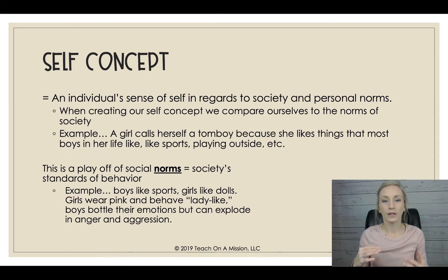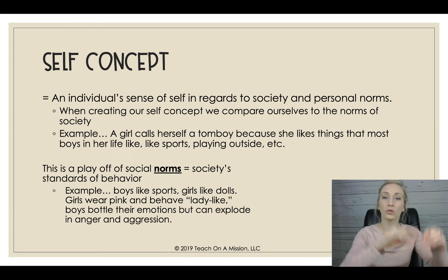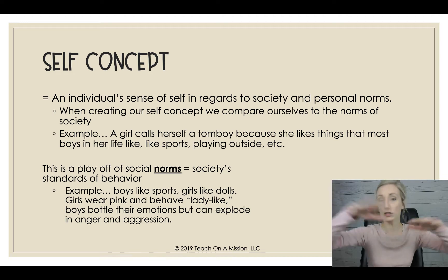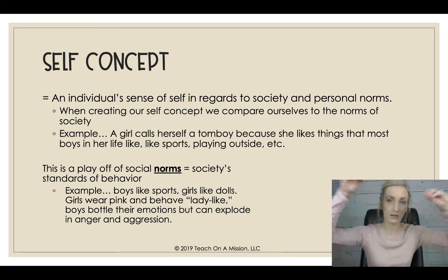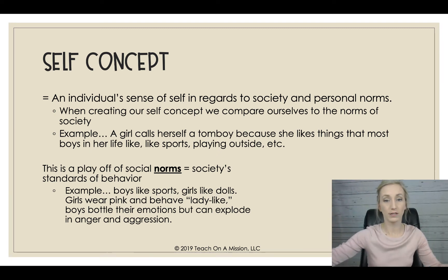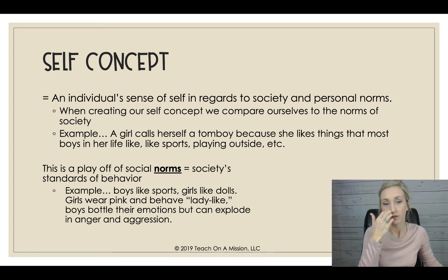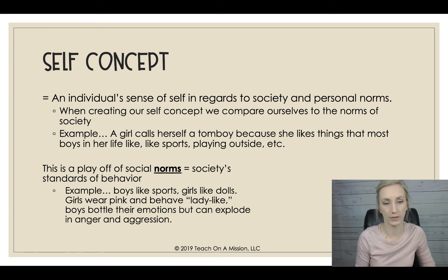An example is when a girl calls herself a tomboy. You might say there's no harm in that, but you have to think of the reasoning behind it. It has to do with her self-concept — she likes things that most boys in her life like, so she compares herself to the norms she sees in society: that boys normally like sports and playing outside. She concludes that must make her a tomboy. This ties into social norms — society's standards of behavior — such as the expectation that boys like sports and girls like dolls.